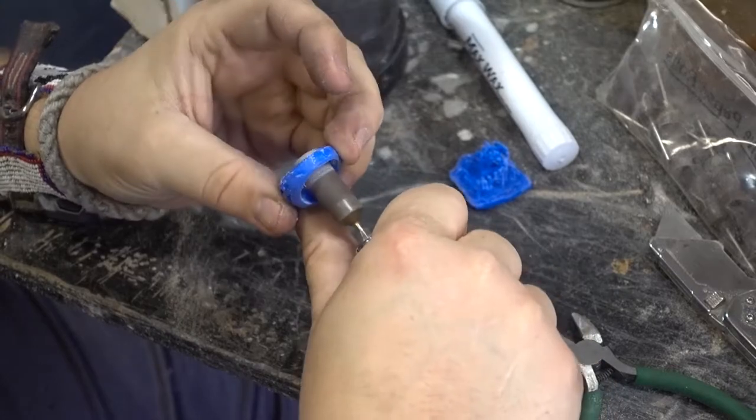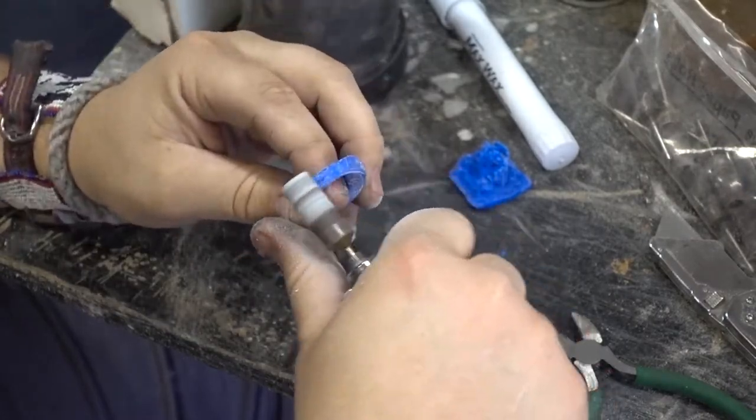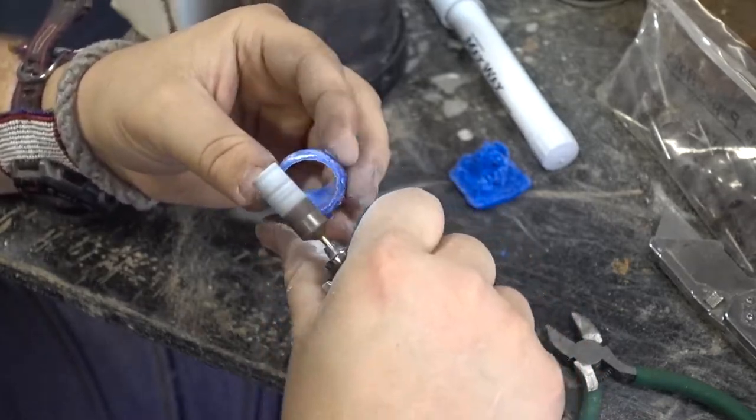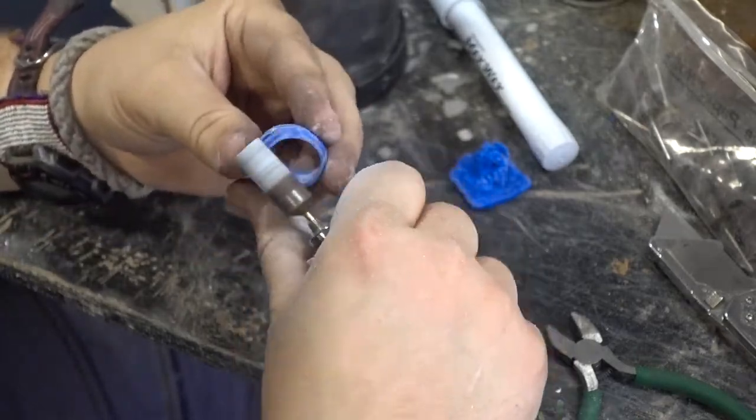You can see we're taking the Dremel wheel and cleaning up all the excess, then scraping out any of the grooves that might have had smaller minor fills from the resin.